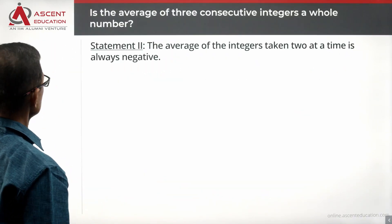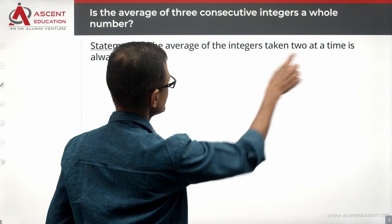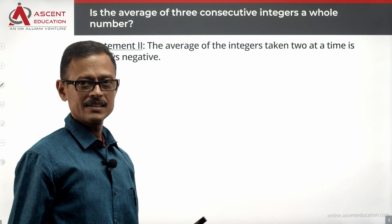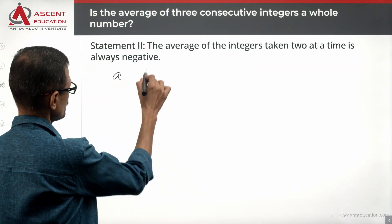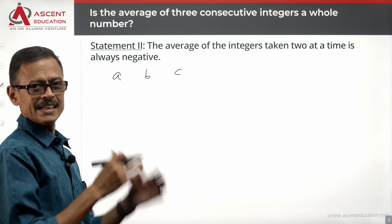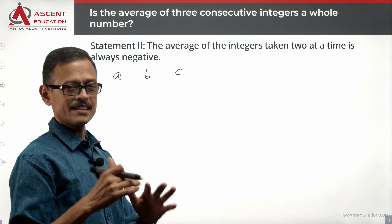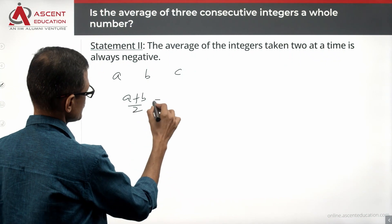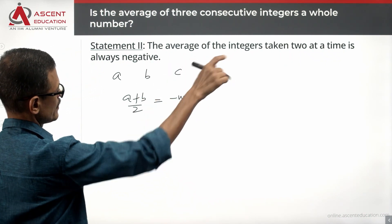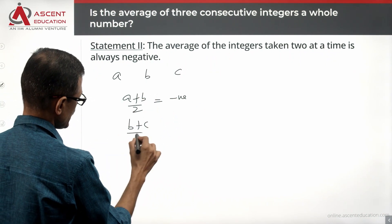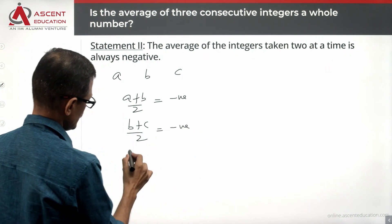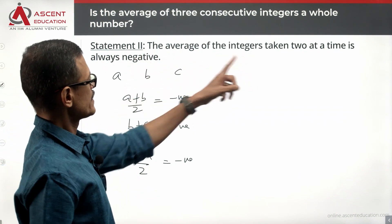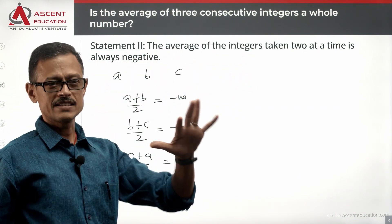Take a look at Statement 2 alone: the average of the integers taken two at a time is always negative. We take our consecutive integers as a, b, c. So a plus b divided by 2 is negative, b plus c divided by 2 is negative, and c plus a divided by 2 is also negative. The average of integers taken two at a time is always negative.